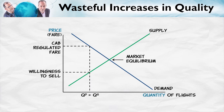Now, here's the key point. At the quantity demanded, the sellers — their willingness to sell, the price at which they are willing to sell — is much below the regulated fare, the price which demanders are paying. This meant that being in the airline industry was extremely profitable, because they were selling a good when their cost was down here and the price that they were selling it at was up here. So this entire rectangle here was profit.